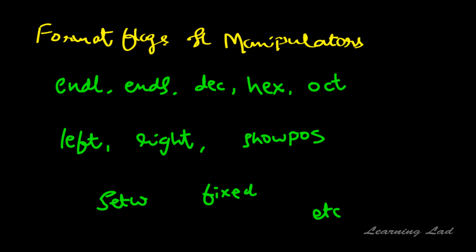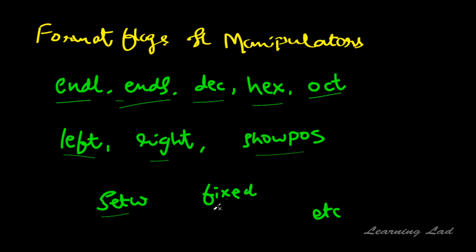The next thing we are going to learn is about format flags and manipulators. When we use a stream in C++, every stream has associated with it a set of format flags and manipulators that control the way information is formatted. For example, we have already used endl, which inserts a new line to the stream, and ends, which adds a null to the stream, and dec for the decimal representation of a number. We are going to learn about them in the upcoming tutorials. Thank you for watching and don't forget to subscribe.